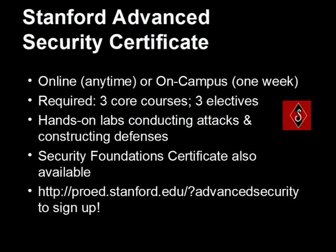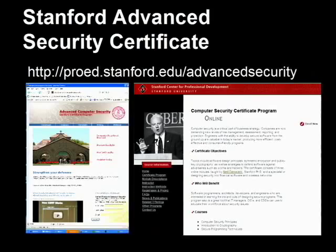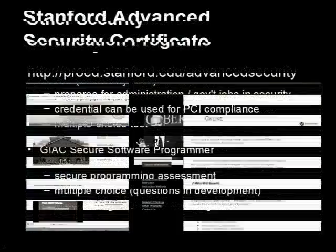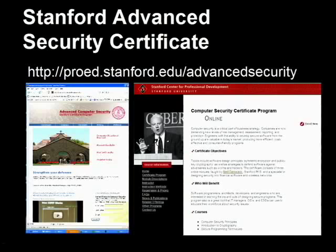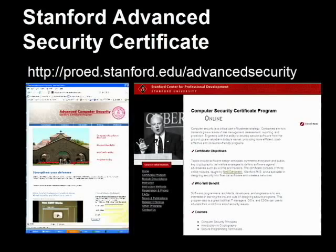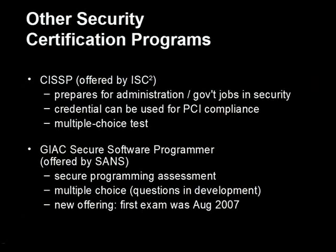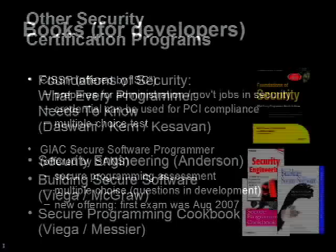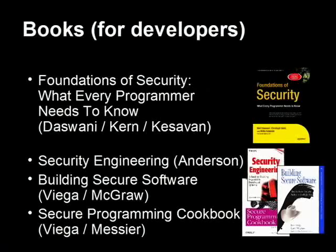There's also a CISSP certification — the Certified Information Security Professional — which is much more broad, focusing on various aspects of security beyond just software: physical security, telecom security, et cetera. There's also a new certification from SANS called the Secure Software Programmer Assessment. There are lots of books as well — my book, 'Foundations of Security: What Every Programmer Needs to Know.' I'll give out some copies after some trivia questions. I'd also recommend Ross Anderson's 'Security Engineering,' available free online, Gary McGraw's 'Building Secure Software,' and Viega and Messier's 'Secure Programming Cookbook.'